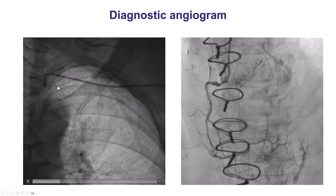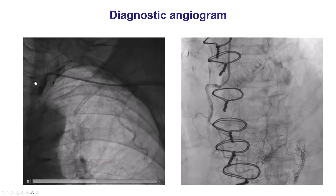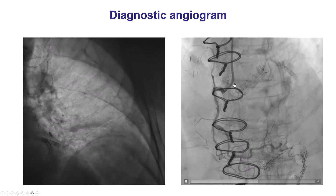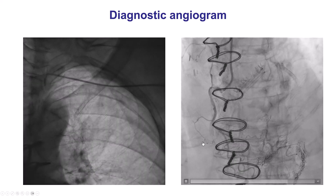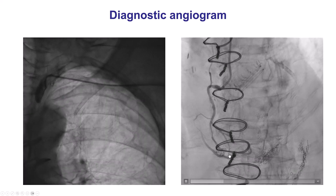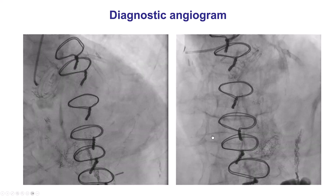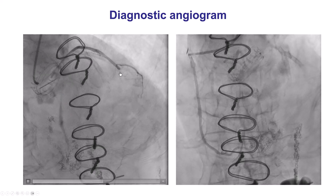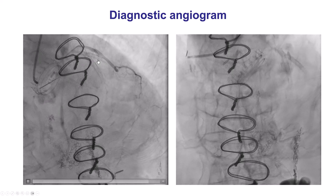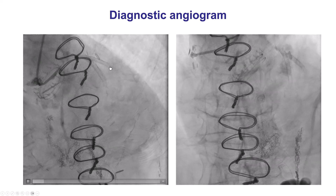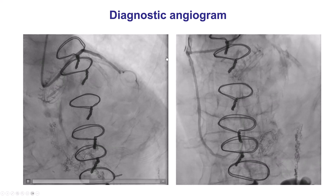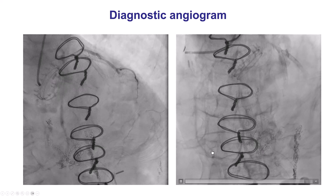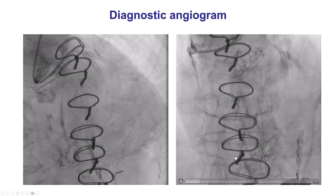This is a coronary angiogram showing occlusion of the LIMA to the LAD. The native RCA has diffuse disease and multiple previous stents. There is a patent bypass going to the diagonal branch, that is distal to a stent in this diagonal branch. And there is also a patent radial graft going to the distal right coronary artery.